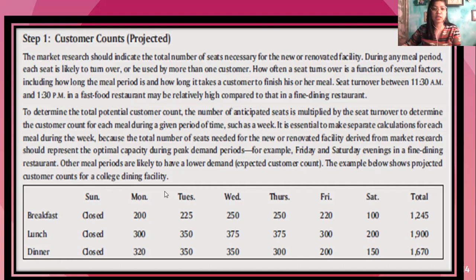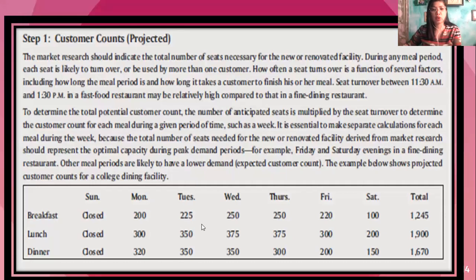The example below shows the projected customer counts in a college dining facility. During Sunday, this facility is closed. For Monday, 100 customers. Tuesday, 225 for breakfast. Wednesday, 250. Thursday, 250. Friday, 220. Saturday, 100. So it differs according to the meal period.